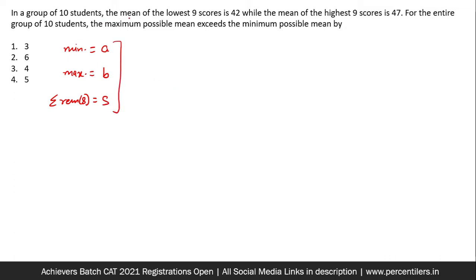So when they say the mean of the lowest nine scores, I'll have to take the minimum score and the sum of the remaining, exclude the maximum basically. That would be 9 times 42. When they say the highest nine scores, that would be B plus S and that would be 9 times 47. Now clearly if I try to simplify these two equations, I'll easily get B minus A to be equal to 9 times 5, 45.